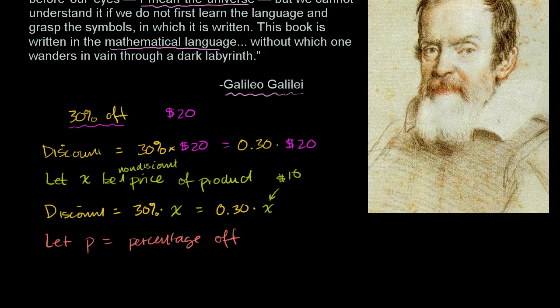Percentage off. Now what can we do? Well, now we can say that the discount, the discount is equal to the percentage off. In these other examples we were picking 30%, but we can say now it's P. It's the percentage off. It's P.